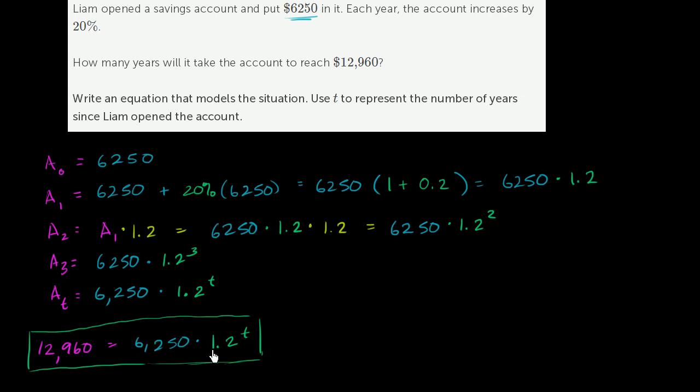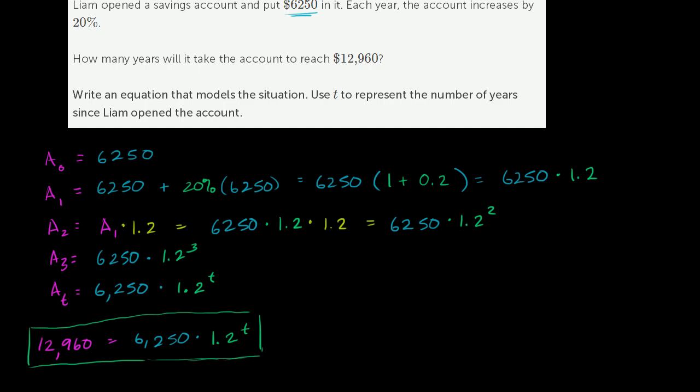And then we need to think about how we can actually go about solving this thing. Well, a natural thing is to isolate the t-variable. Let's divide both sides by 6,250. So we could get 1.2 to the t-power is equal to 12,960 divided by 6,250. And since they're both divisible by 10, why don't we divide them both by 10? So it's 1,296 divided by 625.